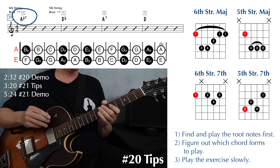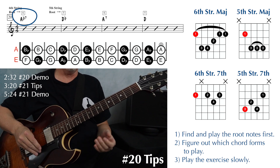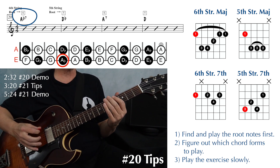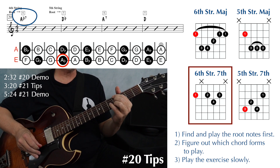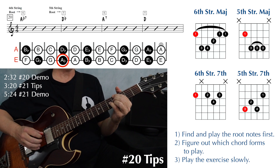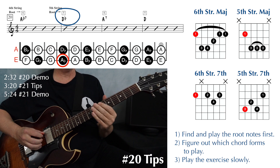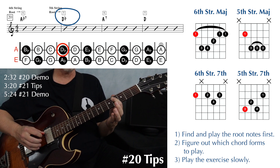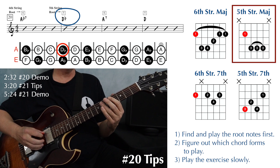The first chord is an Ab7 on string six, so we need to find our Ab note on string six. That'll be at the fourth fret. And because that's on the sixth string, we'll use our sixth string dominant seven shape. Next, we have a Db major on string five. So we need to find our Db note on string five — that will also be at the fourth fret, just on the other string. And because that is a fifth string root, we use our fifth string major shape.